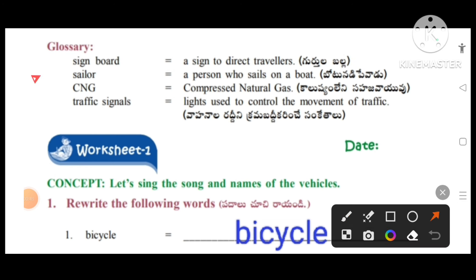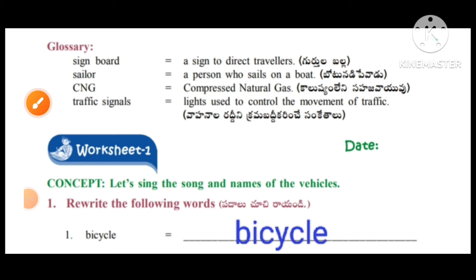First one: signboard — a sign to direct travelers. Next one: sailor — a person who sails on a boat. CNG means compressed natural gas. Traffic signals — lights used to control the movement of traffic.